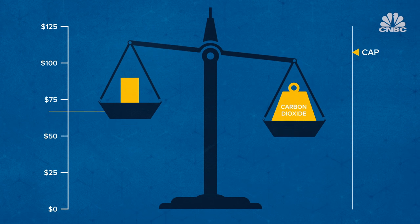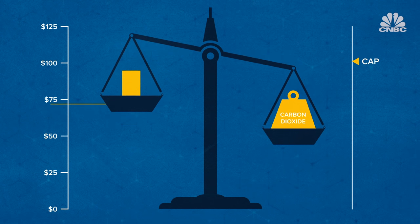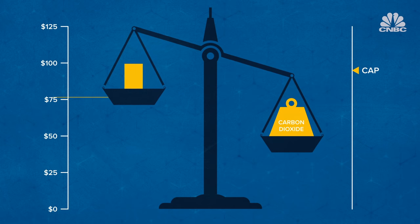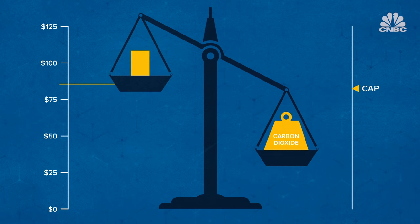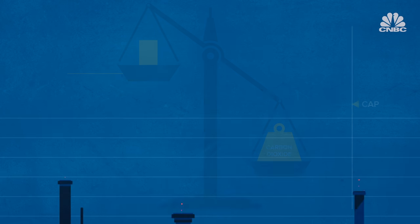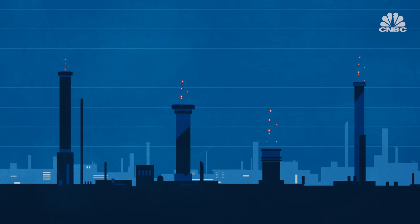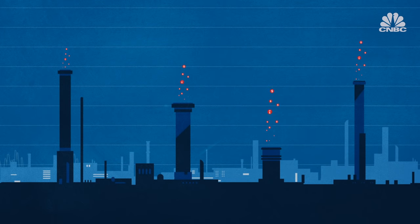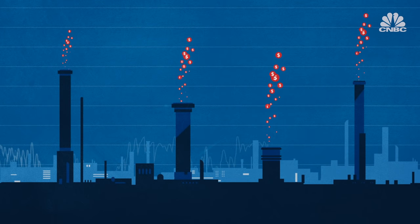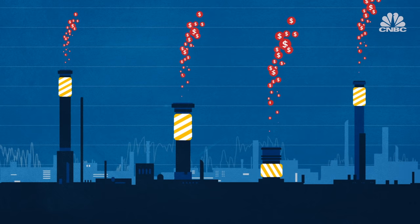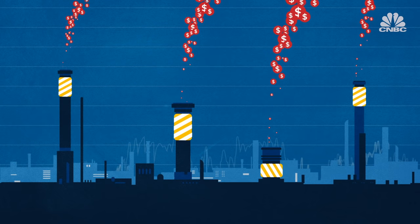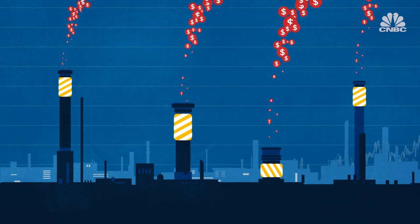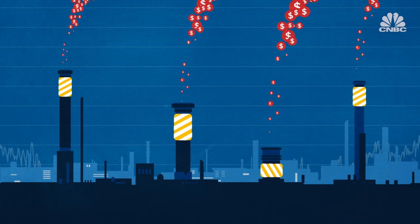Supply of units is capped at a level deemed acceptable, and their costs will rise and fall depending on whether firms find alternatives to polluting. By assigning a price to damaging activity, the system provides a financial incentive for firms to reduce emissions, whilst lowering the overall cost of these reductions as the cheapest improvements are made first.